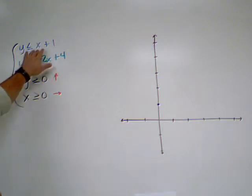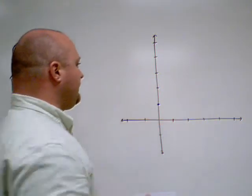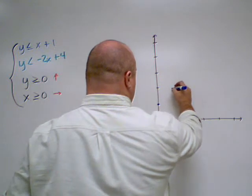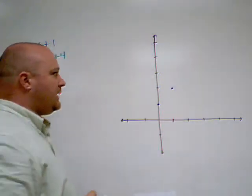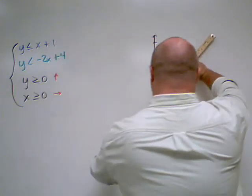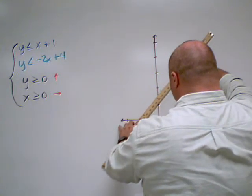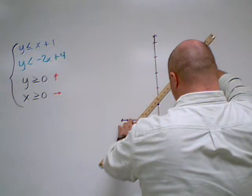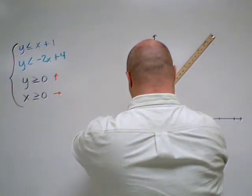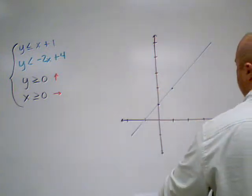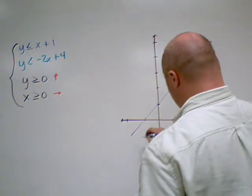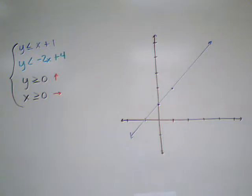And if I use x is one, I plug that in, I'm going to get y is two. So you see I've already got a couple of points, and I can draw a line. Here we go. Alright, so that's one of my inequalities already graphed. It's going to be a solid line.